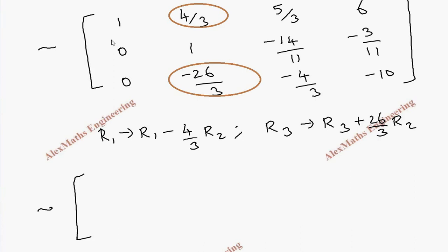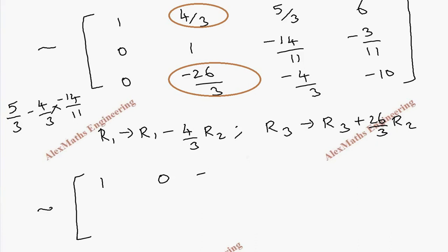Coming to the calculation for R1: 1 minus (4/3) times 0 gives 1, and 0. Then 5/3 minus (4/3)×(-14/11): taking LCM of 33, this is (55 + 56)/33. After simplification we get 37/11.